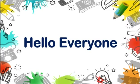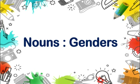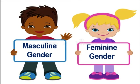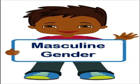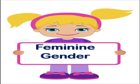Hello everyone! In my previous video I told you about noun genders. In this video I'm going to enhance your knowledge about them by giving you a few examples. Let's start with masculine and feminine genders. A noun that refers to males is called masculine gender, and a noun that refers to females is called feminine gender.